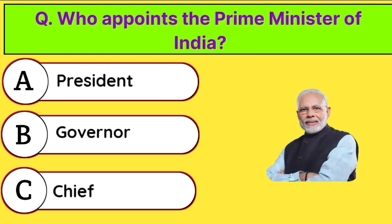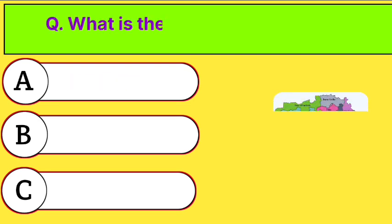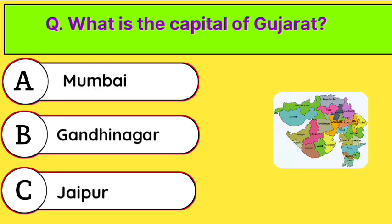Who appoints the prime minister of India? Correct answer is option A. President. What is the capital of Gujarat? Correct answer is option B. Gandhinagar.